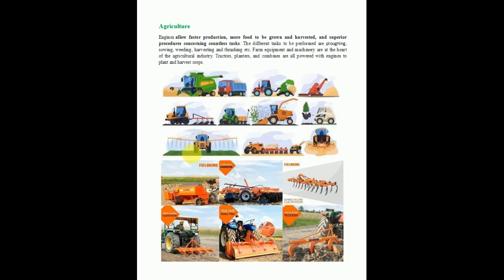Using internal combustion engines in the agriculture sector allows faster production, more food to be grown and harvested, and superior procedures for countless tasks. The different tasks performed are fluffing, sowing, weeding, harvesting, and threshing. Farm equipment and machinery are the heart of the agriculture industry.